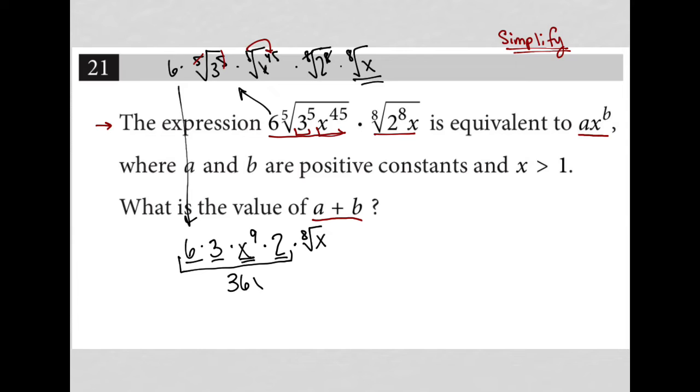My x to the 9th comes down. And I still have this 8th root x. Now, I want this format, ax to the b. It looks like I have my a taken care of, but my x value and my b value are not so certain.